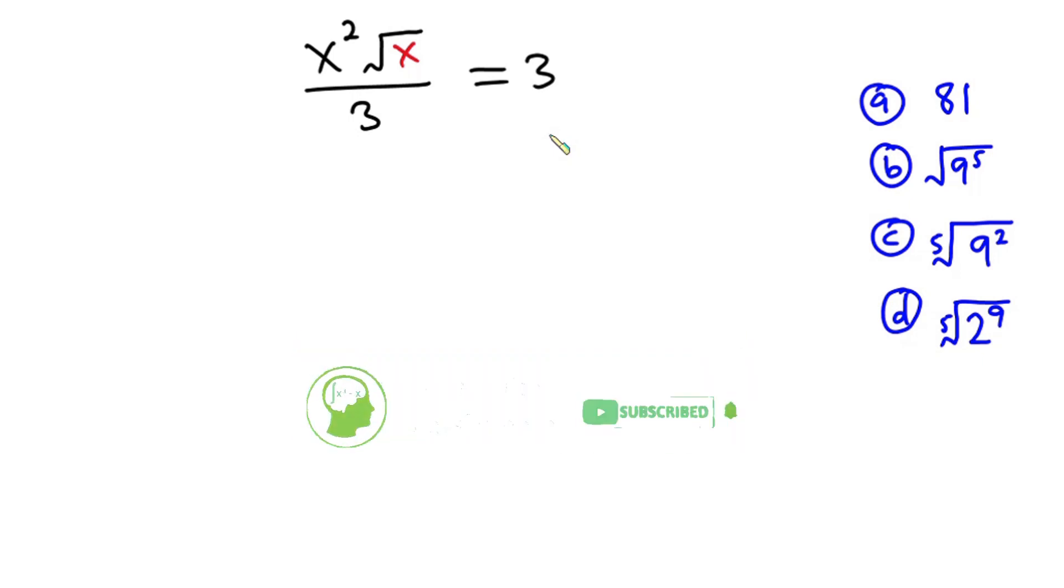Let's get started. First, I'm going to cross multiply, so we have x² times √x equals 3 times 3. Now let's simplify this. x² times √x is the same as x² times x^(1/2), which equals 9. We have the same base multiplying, so I'll write one of them and sum their powers: 2 + 1/2, and this equals 9.